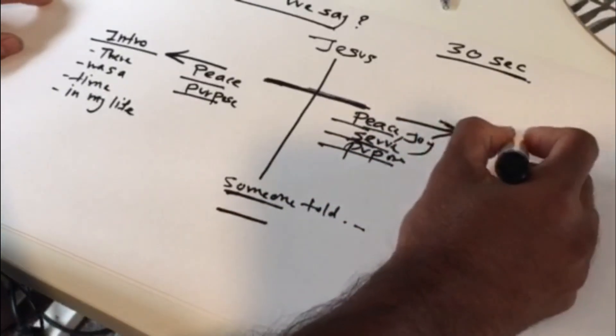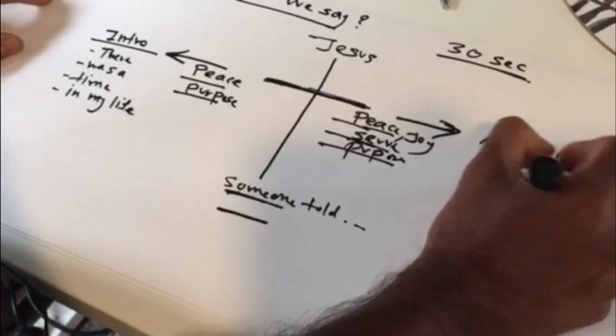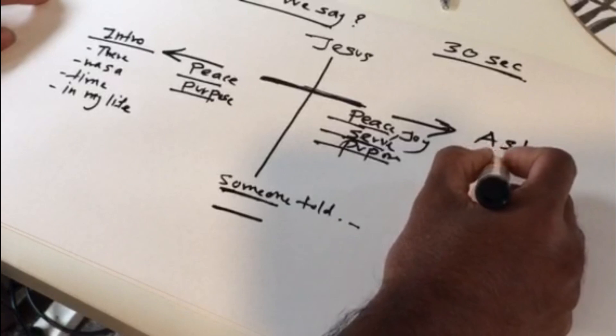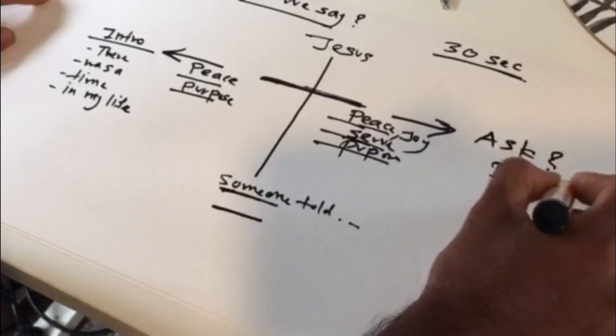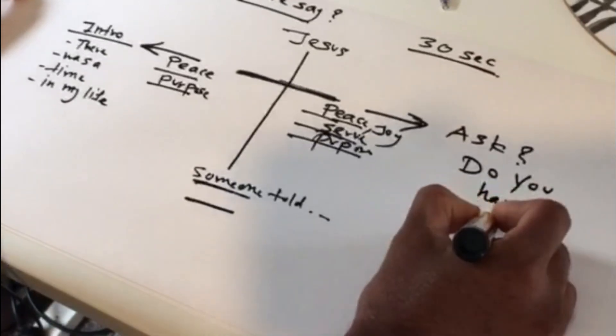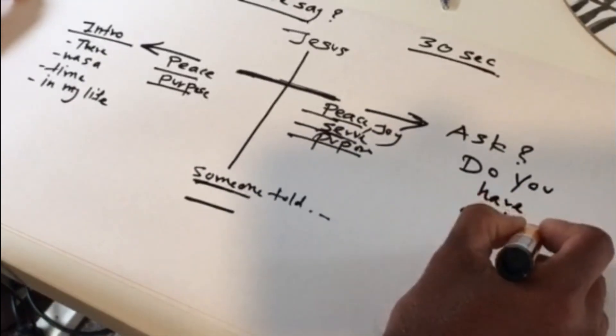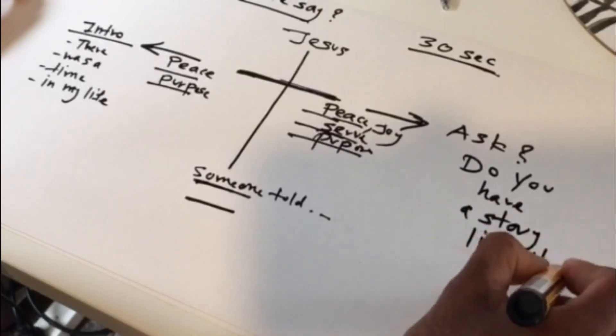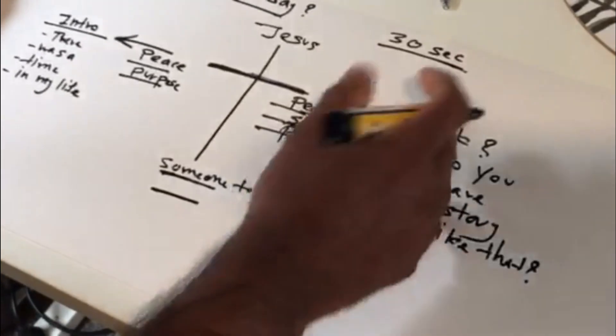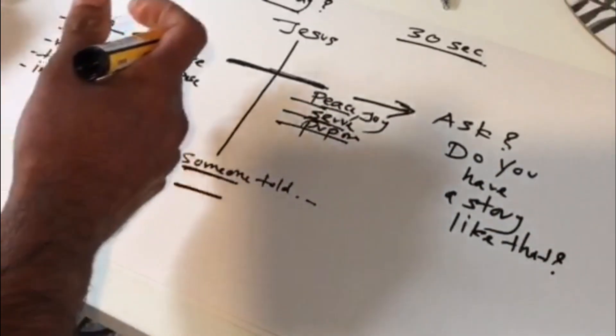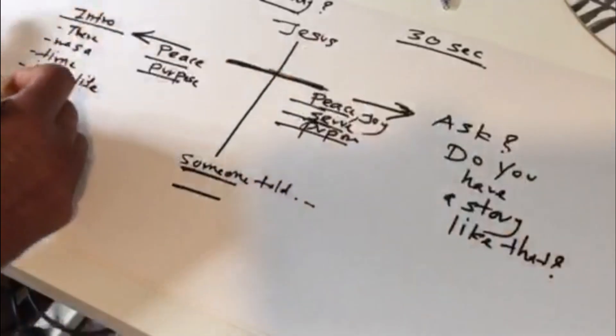And then here we're going to ask a question. So asking a question. Do you have a story like that? So asking basically, do you have a story like that? There's about four, five parts to it.